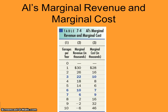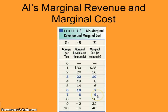For Al's Garages, his sixth garage costs an additional $7,000 to build and brings in an additional $10,000 — so that's a great decision. If he goes on to the seventh garage, it costs an additional $9,000 to build but only brings in $6,000 in revenue, so the seventh garage is not profitable. He stops at six. In a perfect world, MR and MC could be exactly equal, like $10,000 and $10,000.